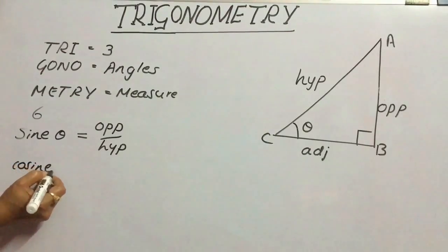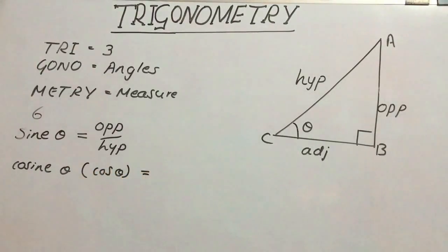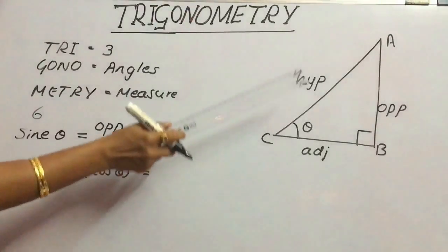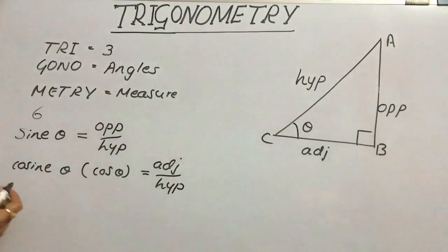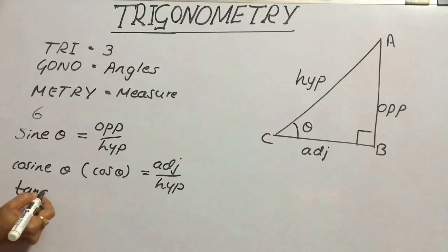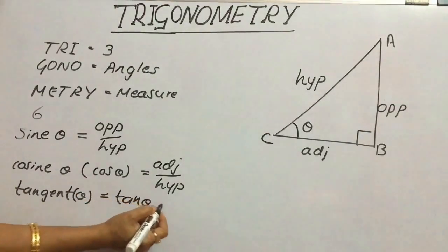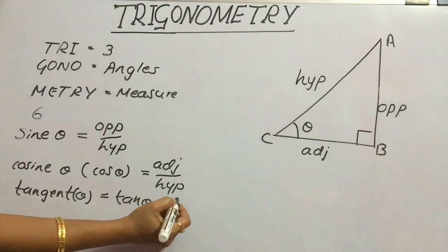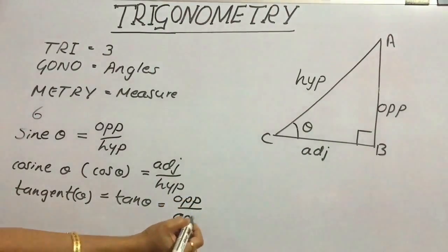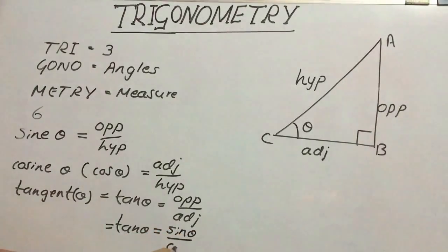Next, cosine of the angle theta — we call it cos theta — is equal to the adjacent side divided by the hypotenuse. Now, tangent of the angle theta, which we call tan theta, is the ratio of the opposite side by the adjacent side. This tan theta can also be written as sin theta divided by cos theta.